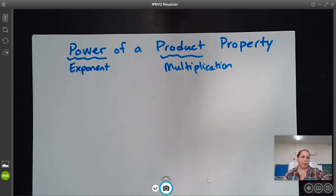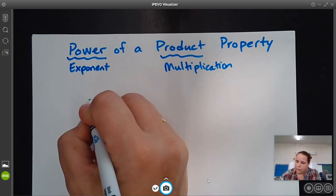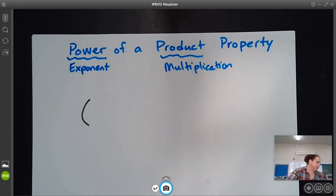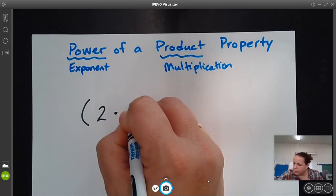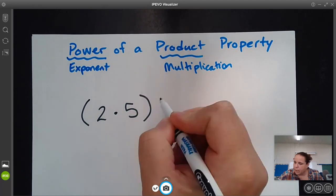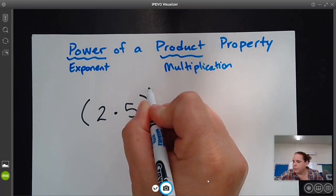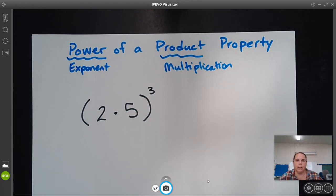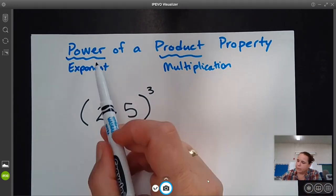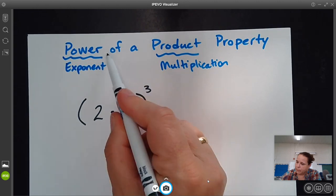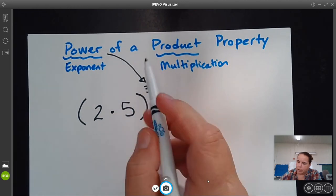And so what this is going to look like is you're going to say something, for example, 2 times 5 to the third power. So what this can help you do, right? So it's the power, here's the power, right? Here's your power of the product.